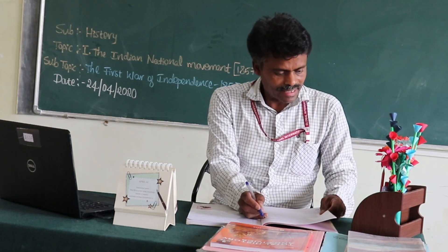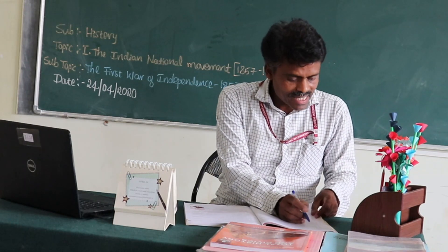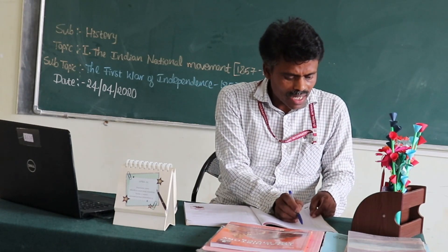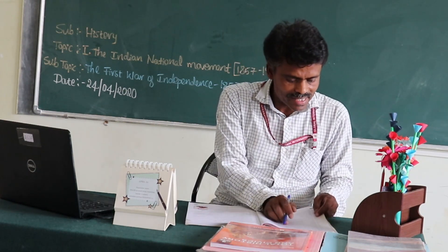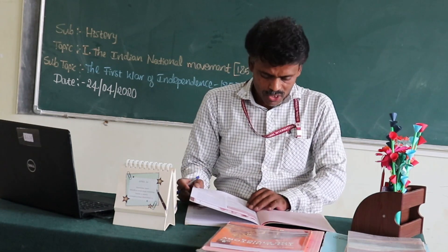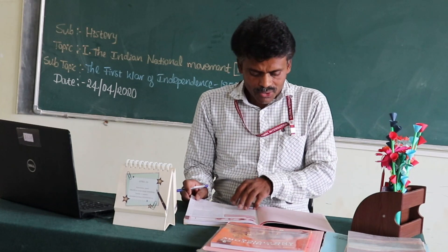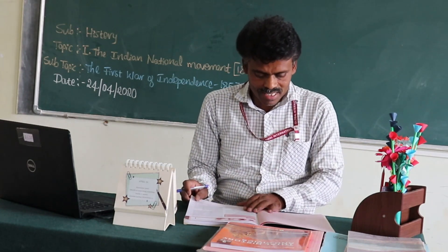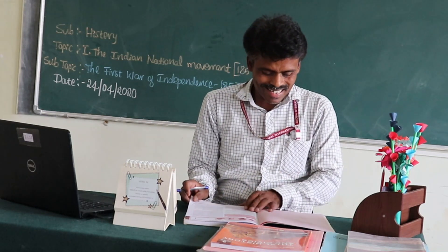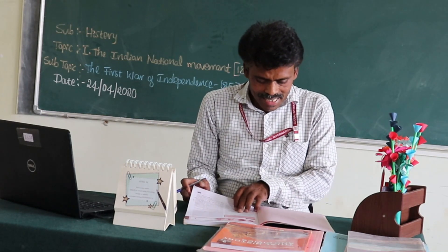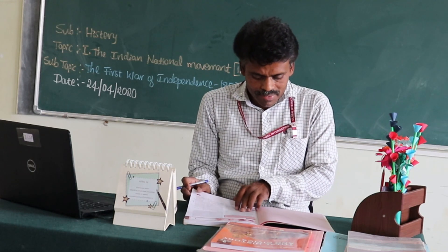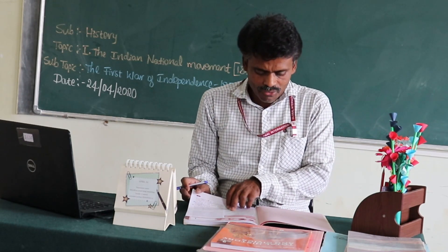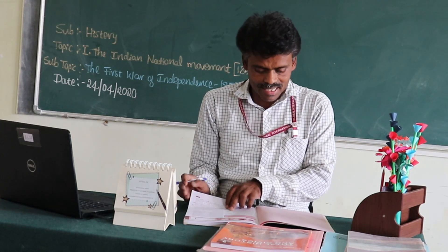Next, come to the second question on the same page number 22: Why was the war of 1857 called the First War of Independence? The answer is just below what you marked for the first answer — starting with 'The culmination of such opposition.' Mark from there till the end of the paragraph, ending with 'very foundation.' That is the second answer.